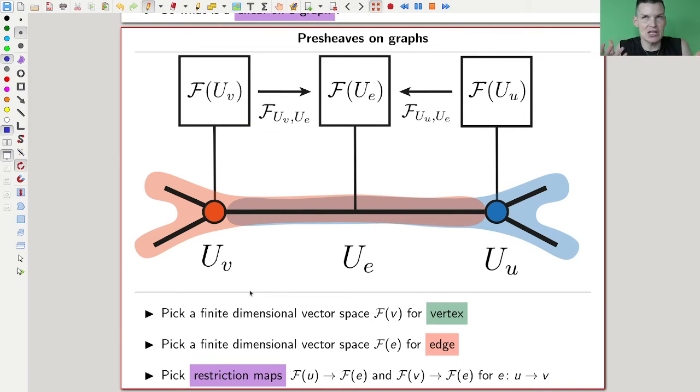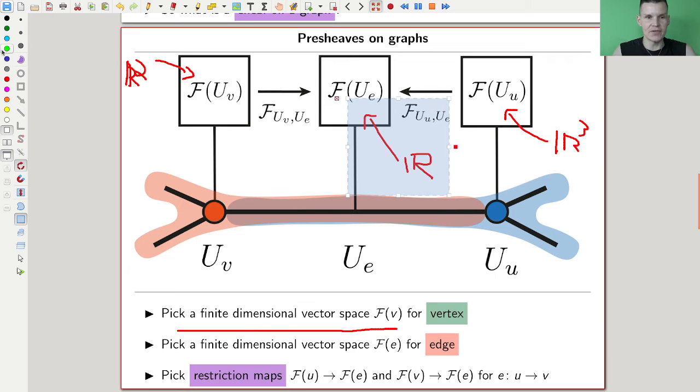And in this case, the easiest thing I could imagine attaching to a space is a vector space. So I attach, let's say, a finite dimensional vector space for every vertex. So here's some finite dimensional vector space, whatever, R squared, or some verb like that. Here's another finite dimensional vector space, R cubed, or whatever. And here's another finite dimensional vector space. Let's say R. I attach them not just to every vertex, but also to every edge, because this corresponds to the open sets. So every vertex and every edge gets a vector space.